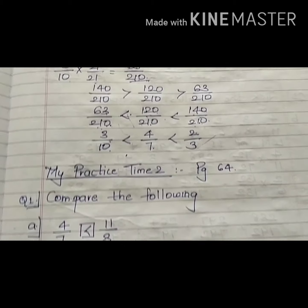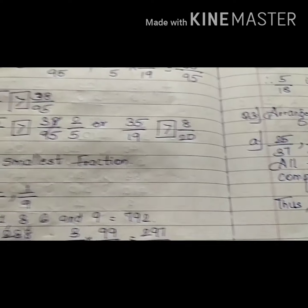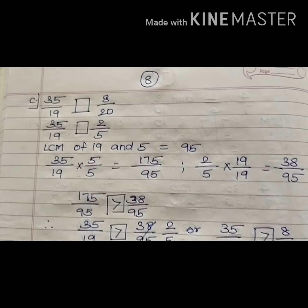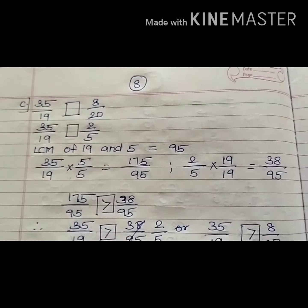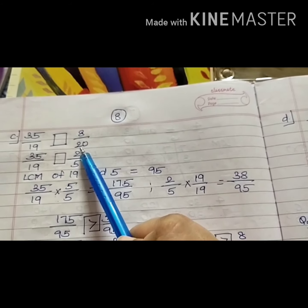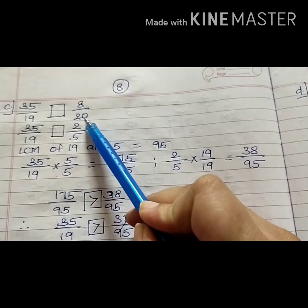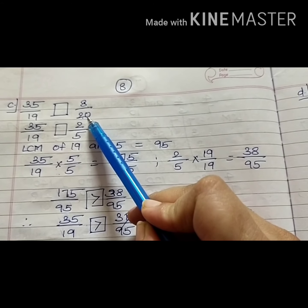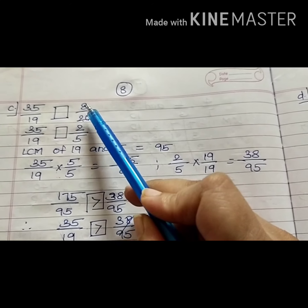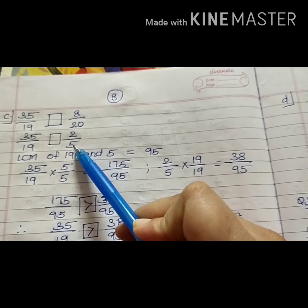Now let us solve a practice problem: comparing 35 upon 19 and 8 upon 20. The denominators are not the same, so we will make them equal using the LCM. But first, observe that 8 upon 20 can be reduced. It is always good to reduce fractions first as it makes the calculation easier. Dividing by 4 gives us 2 upon 5.